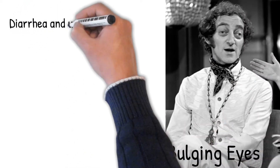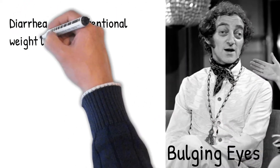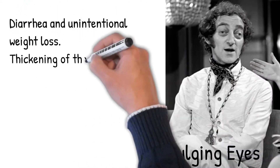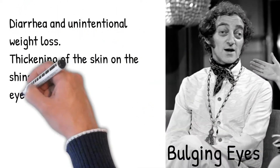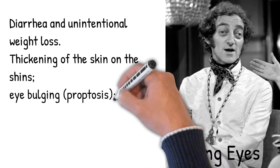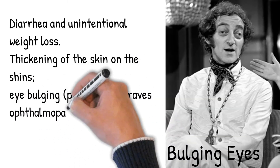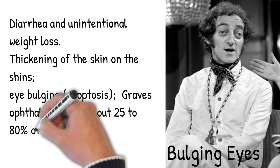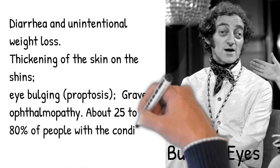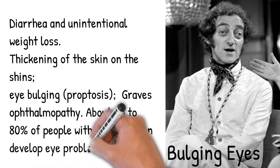Thickening of the skin on the shins, eye bulging, proptosis, and Graves' ophthalmopathy. About 25–80% of people with the condition develop eye problems.